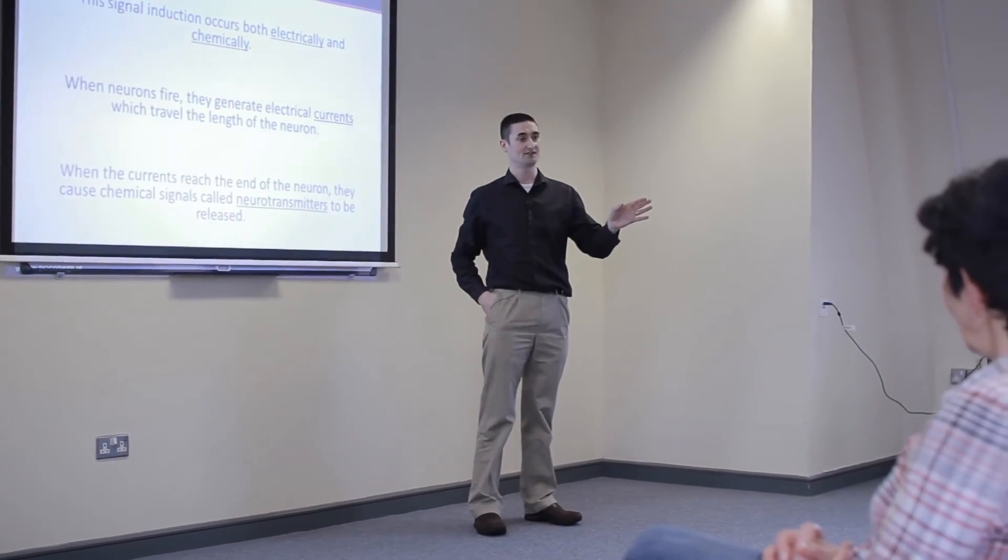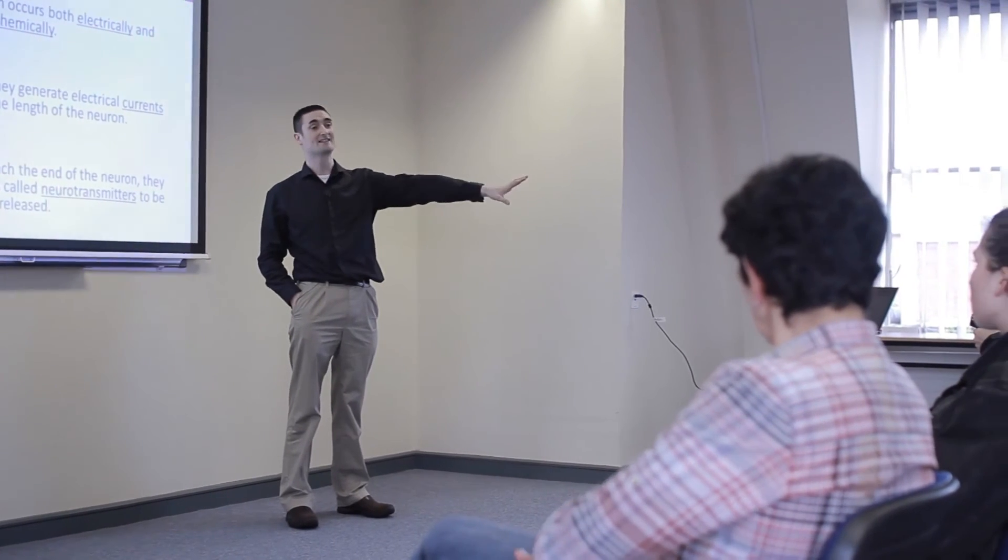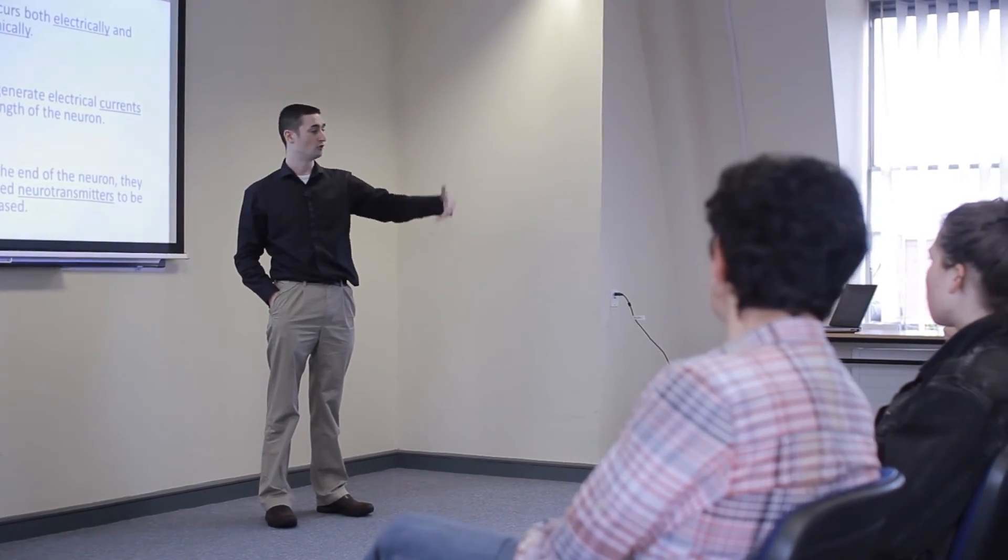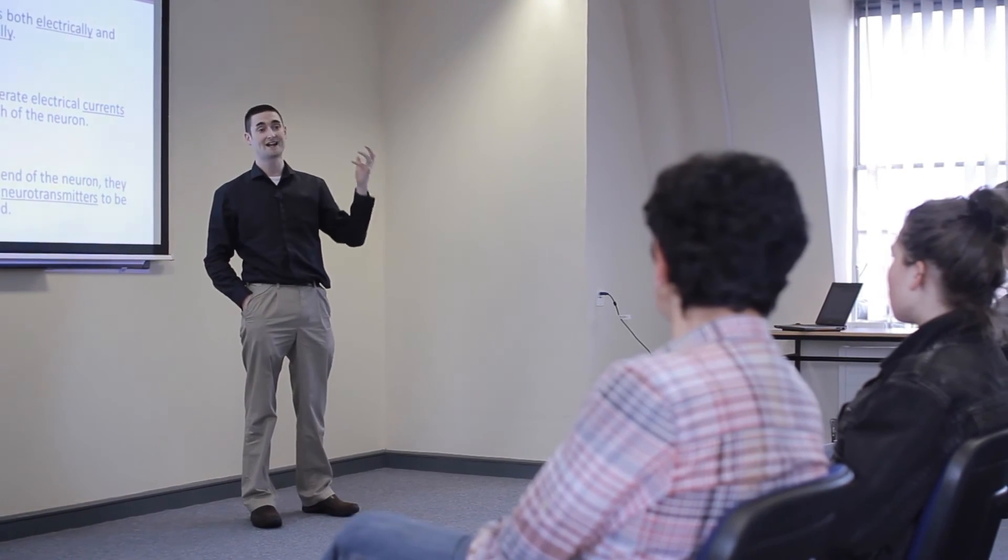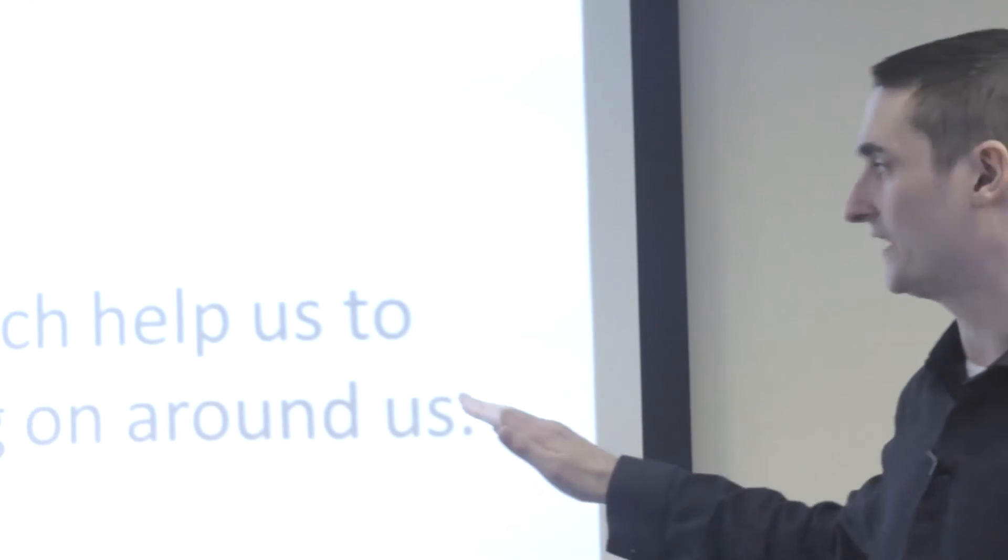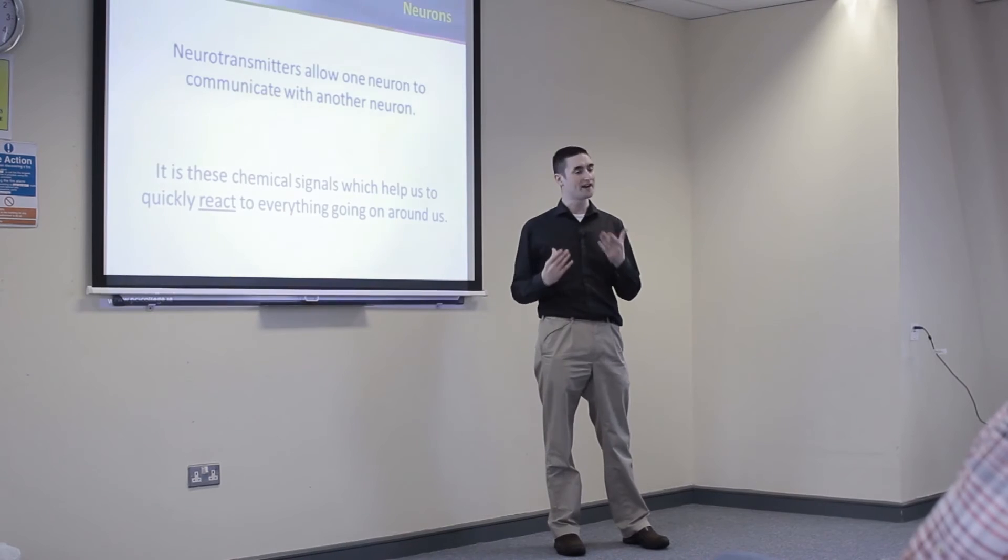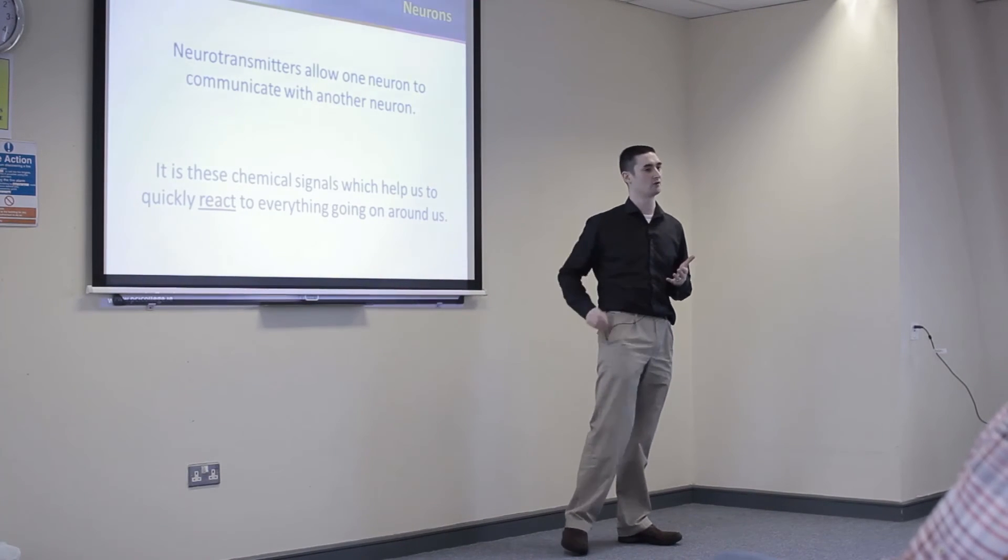They send specific messages saying, this guy is telling me there's a ball coming towards your face. Pass the information on so we can get to the group of neurons that controls you lifting your arm and catching the ball or not getting hit by the ball. So electrochemical activity is what is most important to bear in mind when we think about neural activity. Neurotransmitters allow one neuron to communicate with another neuron, and it's the chemical signals specifically which allow us to do that.